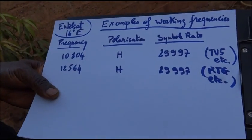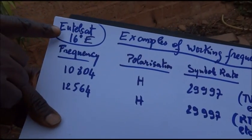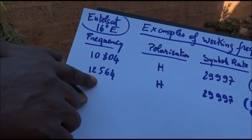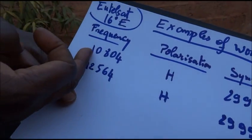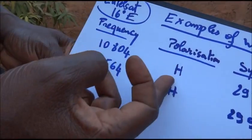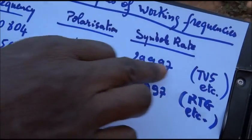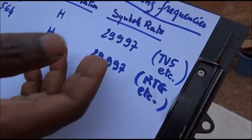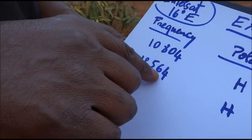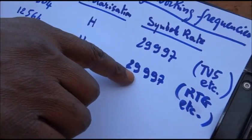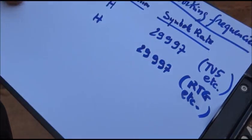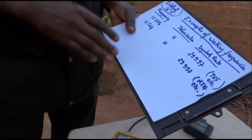A few words about frequencies, polarization, and symbol rate. For example, the satellite EUTELSAT located at 16 degrees east has working frequency 10,804 Hz with polarization H — this works in Africa, at least West Africa — and symbol rate 29,997. On this frequency you can get programs like TV5 and others. A second frequency is 12,564 H, also with symbol rate 29,997, carrying the national television of Gabon and other channels.